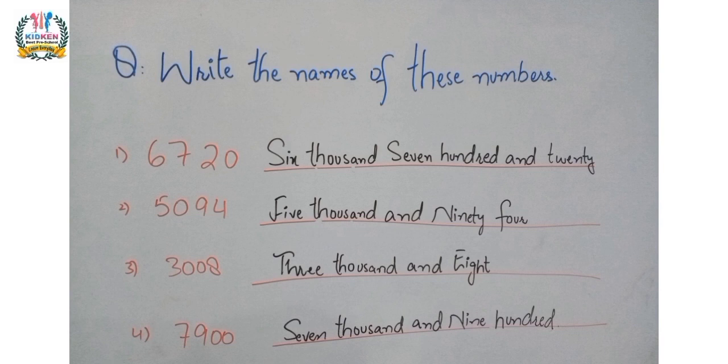Fourth part is 7900. So we can write these numbers in words: seven thousand nine hundred.